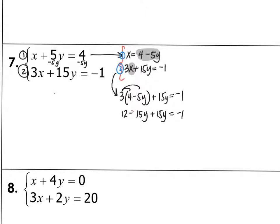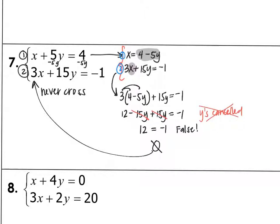When you go to combine like terms, you'll see that your negative 15y and your positive 15y cancels out. So our y's are gone. How can we solve for y if our y's are gone? So listen to what happens here. You end up with 12 is equal to negative 1. That is not true. As a result, there is no solution, which means these lines never cross, which means these are parallel lines.